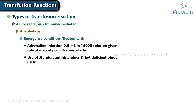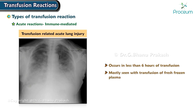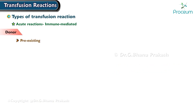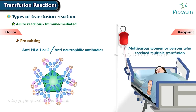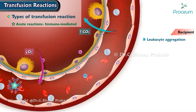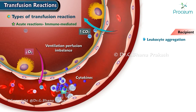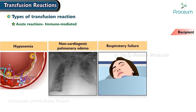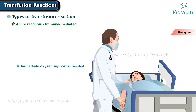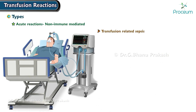Transfusion-related acute lung injury (TRALI) occurs in less than six hours of transfusion and is mostly seen with transfusion of fresh frozen plasma. Donors who have pre-existing anti-HLA 1 or 2 antibodies or anti-neutrophilic antibodies, such as multiparous women or persons who received multiple transfusions, cause leukocyte aggregation in the recipient's pulmonary capillaries, leading to ventilation-perfusion imbalance and release of cytokines. Recipients present with acute onset hypoxemia, non-cardiogenic pulmonary edema, respiratory failure, and cyanosis. Immediate oxygen support is needed.